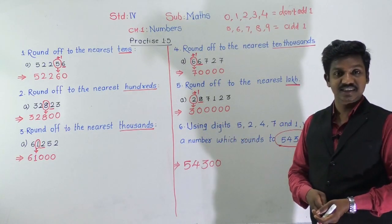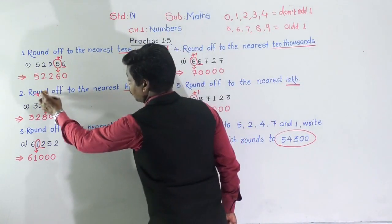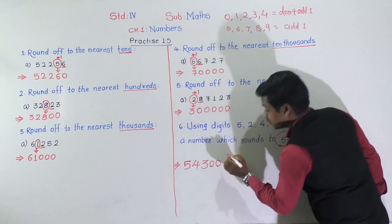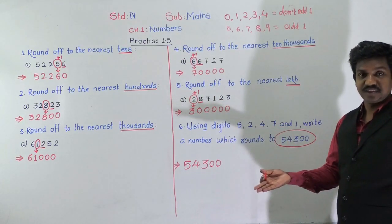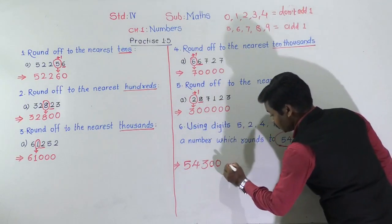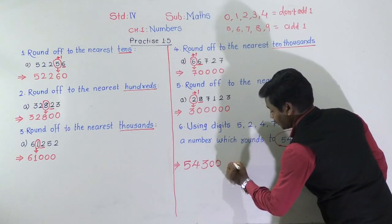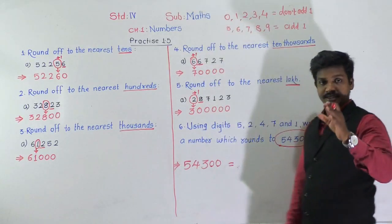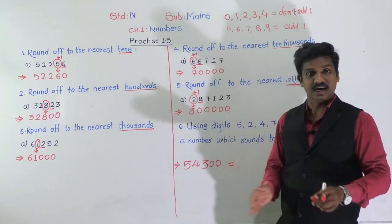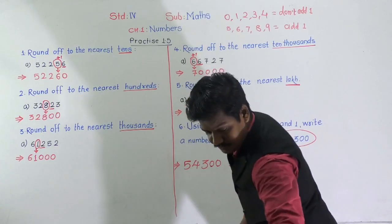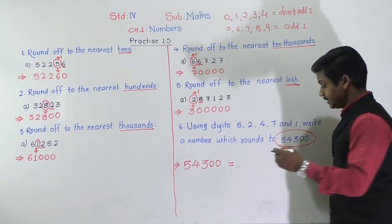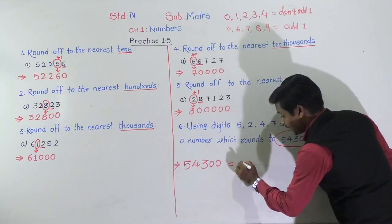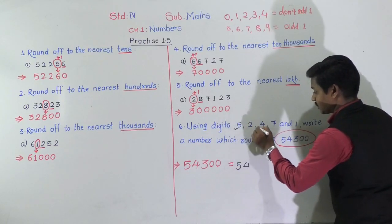When rounded to nearest hundred, we get two zeros at the end. So this number is rounded to the nearest hundred — the hundreds place digit is what was rounded. The digits before the hundreds place — 5 and 4 — will remain the same at the ten thousands and thousands places. That means 5 and 4 come at those two places.